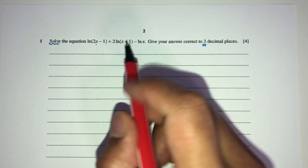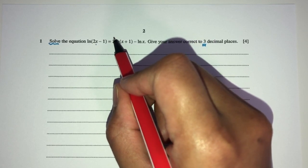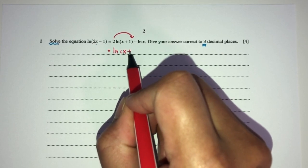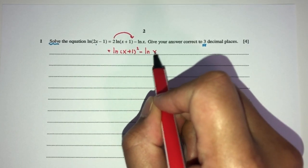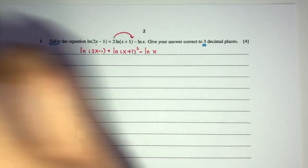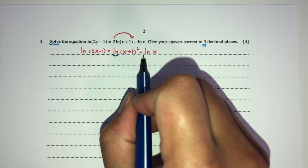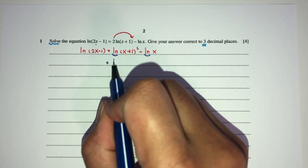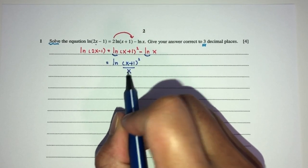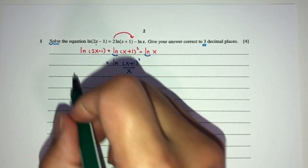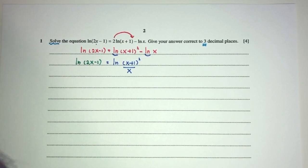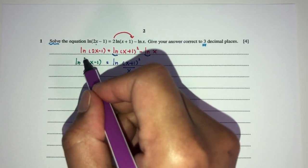Let's combine these two together. First let's send this power on top — that will become ln of (x+1) squared minus ln of x. Here we have ln of (2x-1). Now because these are the same we can combine them together: that will be ln of (x+1) squared divided by x, and here you still have ln of (2x-1). Now because we have ln on both sides of the equation, you can cancel out.